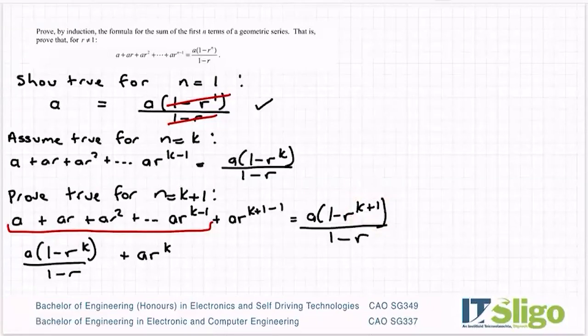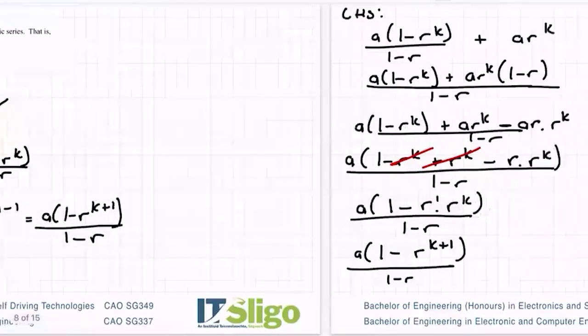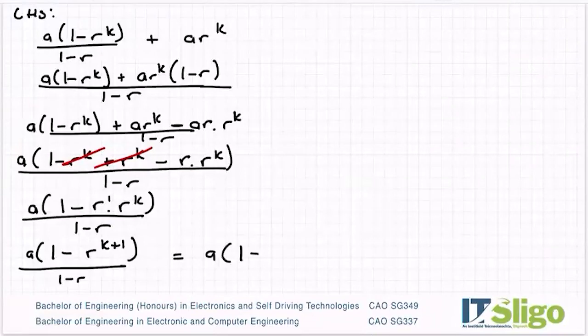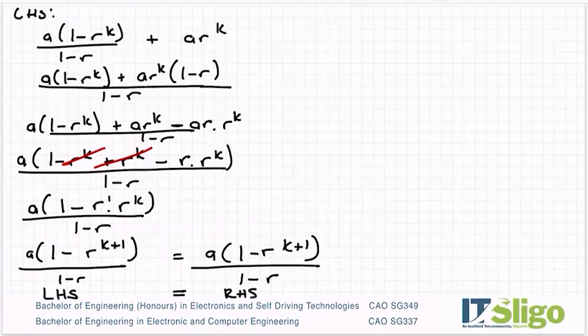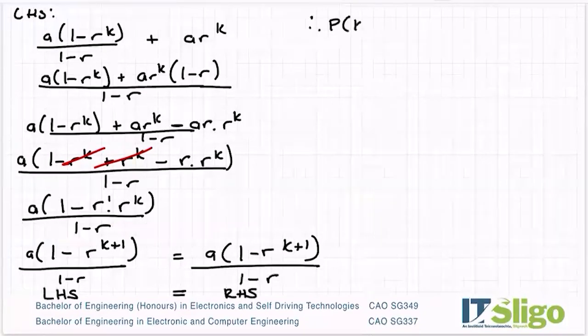So my right hand side on that one was already a times 1 minus r to the power of k plus 1 over 1 minus r. So the left hand side now equals the right hand side. Therefore, p of k plus 1 holds true.